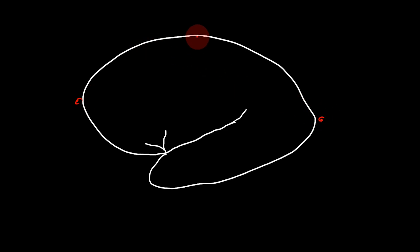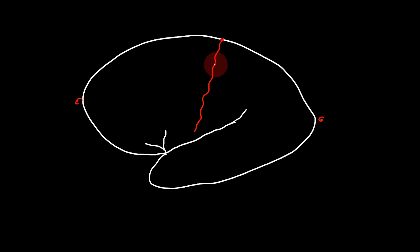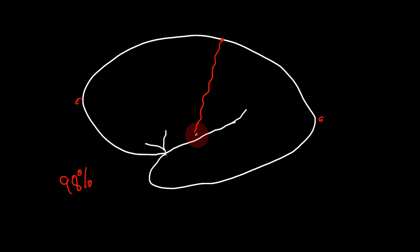Now, how will you separate the frontal from the parietal? That is by the central sulcus or the rolandic fissure. We are going to draw the rolandic fissure now. Just behind the midpoint between the frontal pole and the occipital pole, you draw an anteriorly curved sinuous line, and that line will typically intersect the superior medial margin. It typically does not intersect the sylvian fissure posterior ramus — it just falls short of it. This is seen in 98% of people, and in 2% it may go ahead and intersect.